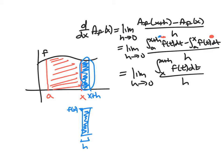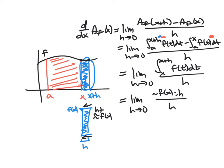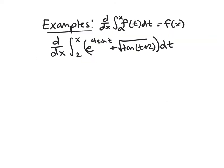The sliver isn't exactly a rectangle — there's some curvature — but as h → 0, the rectangle gets thinner and thinner, and because f is continuous, the height approaches f(x). So the area is approximately f(x)·h, and dividing by h cancels, leaving f(x). Since f(x) doesn't depend on h, this is exactly what we wanted to show: the derivative of the area function is the function we started with.